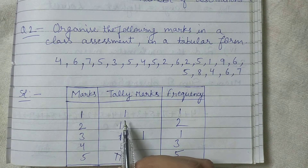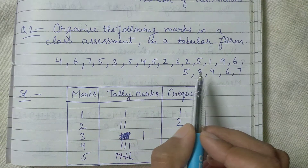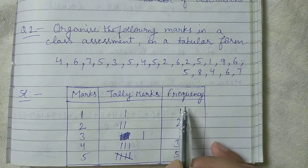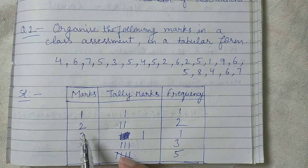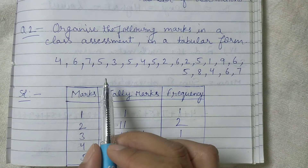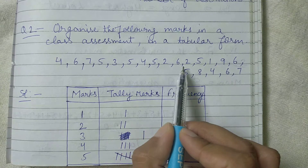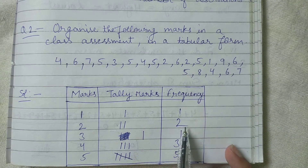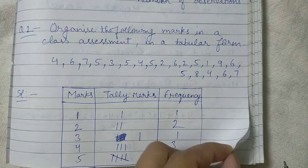We have to complete the table like that. First, mark one — represent it with a tally mark, then write the frequency. Check how many times one appears — only one time, so frequency is one. Then for mark two — represent it, then check the frequency. Two appears one and two times — so the frequency is two. Just like that you have to complete the table for all the marks given in the question.